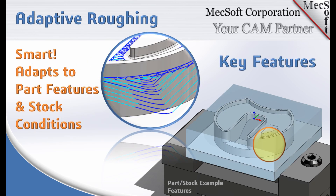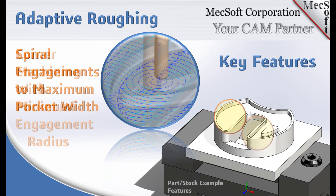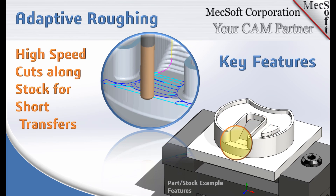Adaptive Roughing automatically adapts to part features and in-process stock conditions, making it one smart toolpath. Its high-speed cut patterns apply spiral engagements that open up to the full width of any pocket feature. Corner features are detected and then machined with a minimum engagement radius. Where conditions allow, high-speed cut motions follow in-process stock for the shortest transfer distances.